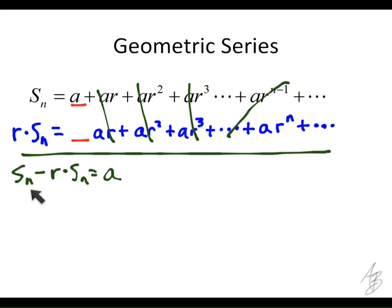So if I want to know what the sum is, I can solve this for S sub n fairly easily. Just factor out our S sub n. We get one minus r there equals a. So that means that S sub n equals a over one minus r.